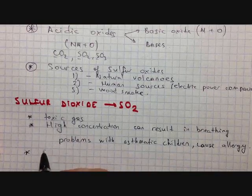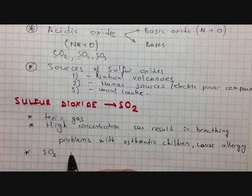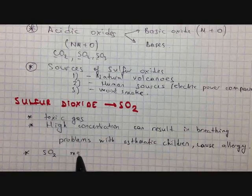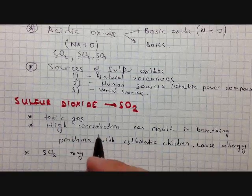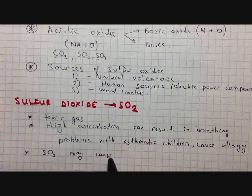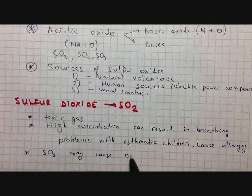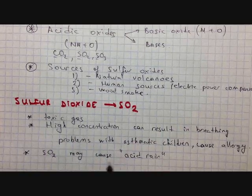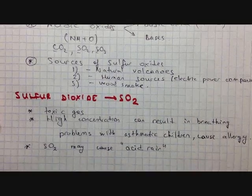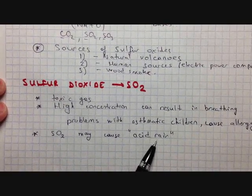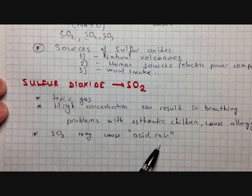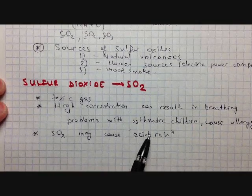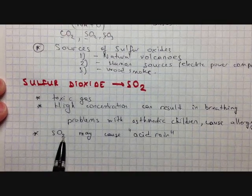Sulfur dioxide may cause acid rain. You may have heard of acid rain — sulfur dioxide is one of the main precursors of acid rain.